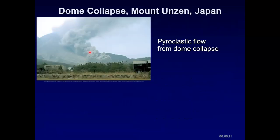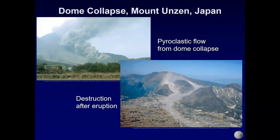Here's an example of a dome collapsing in Japan. This dome collapsed repeatedly between 1990 and 1995, producing 10,000 small pyroclastic flows. People became interested in it, including photographers and volcanologists. In 1991, a larger pyroclastic flow from the dome collapse killed 43 people, and the damage was concentrated along the lowest parts of the valley. You don't want to be in the pathway of a pyroclastic flow.